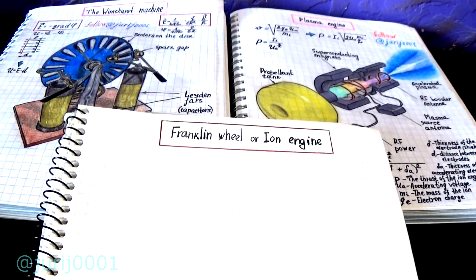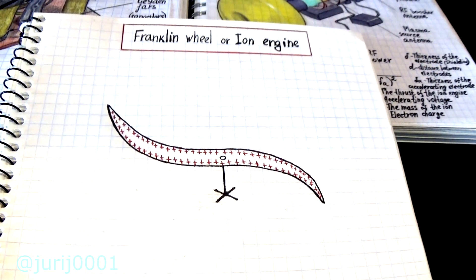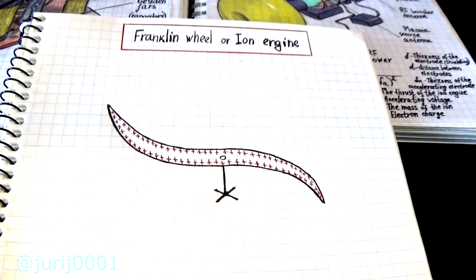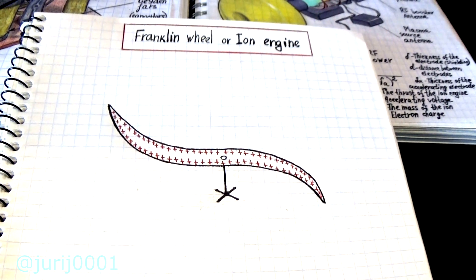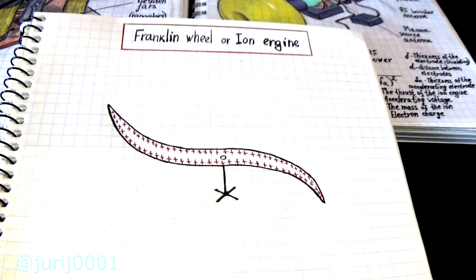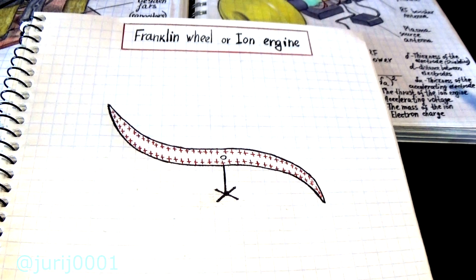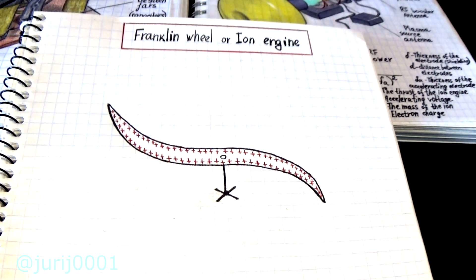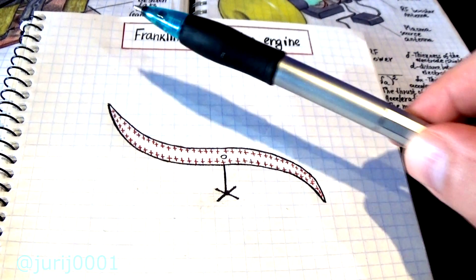So imagine that you have a positively charged conductor that has sharp edges. I hope you know that the charges in the conductor are located only on the surface of the charged conductor. Therefore, near the tip, the electric charge density will be higher.